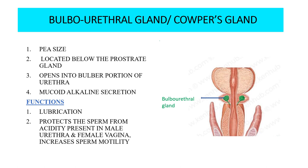The bulbourethral gland is a pea-sized gland located below the prostate gland, opening into the bulbar portion of the urethra. Its secretion is mucoid and alkaline in nature. Its main function is lubrication and protection of sperm from acidity present in the male urethra and female vagina. Secretion of the bulbourethral gland helps clear the male urethra of any residual urine prior to ejaculation and also increases sperm motility.